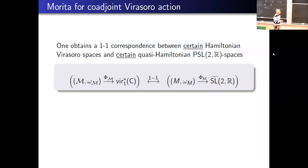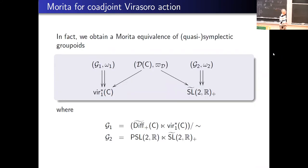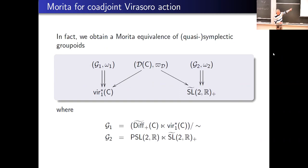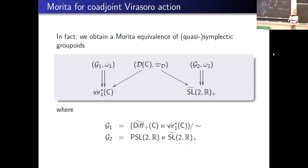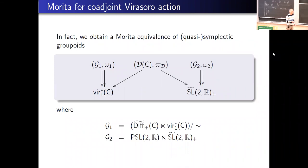In general for these quasi-symplectic groupoids, the thing on top is a quasi-Hamiltonian space, the thing at the bottom has a Dirac structure — here one has a Poisson structure which gets integrated to a symplectic groupoid, and here one has a Dirac structure integrated to a quasi-symplectic groupoid. The thing on the right is just a special case of our group-valued moment map story.